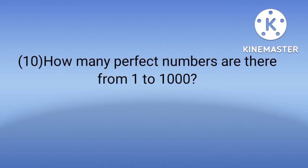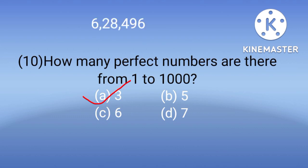Next question is: How many perfect numbers are there from 1 to 1000? Options are 3, 5, 6, 7. The answer is A, 3. The numbers 6, 28, and 496 are perfect numbers less than 1000.